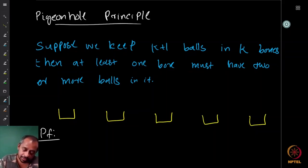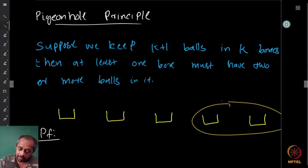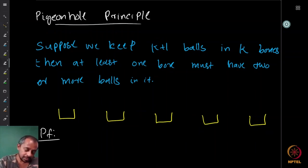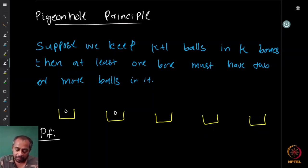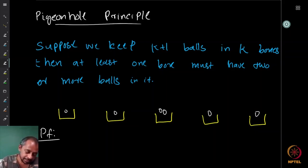We can say it in terms of balls and bins: you have k plus one balls and k boxes or bins. Into these k bins suppose we deposit k plus one balls. What I want to prove is that at least one of them must have two or more balls. If I try to avoid that, I put at most one in each, but then I cannot fit all k plus one, so at least one box must have two or more.